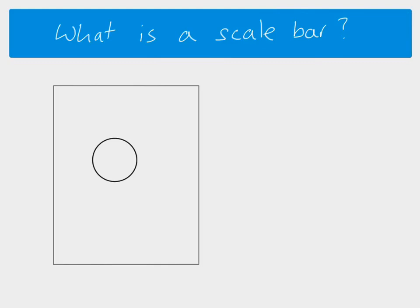We can use a scale bar to calculate that magnification. The scale bar is drawn somewhere else on the piece of paper, and next to the scale bar it says how long that scale bar is in real life. This one says the actual size is 20 micrometers. Obviously on this piece of paper the scale bar is much bigger than 20 micrometers — 20 micrometers is the actual size that this line would be if the image had not been magnified. The scale bar is drawn to the same magnification as the cell.